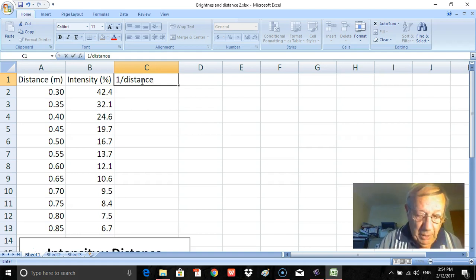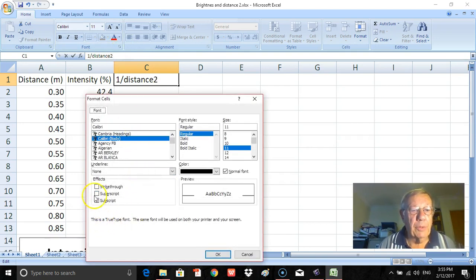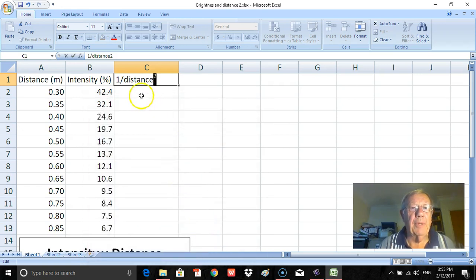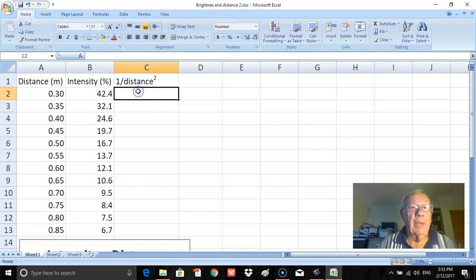1 over distance squared, which will be raised to the power of 2. So I'll select that. In order to put the distance squared I'll go up here to home and I'll go across here to superscript, click superscript there and click OK. So I've got 1 over distance squared there.